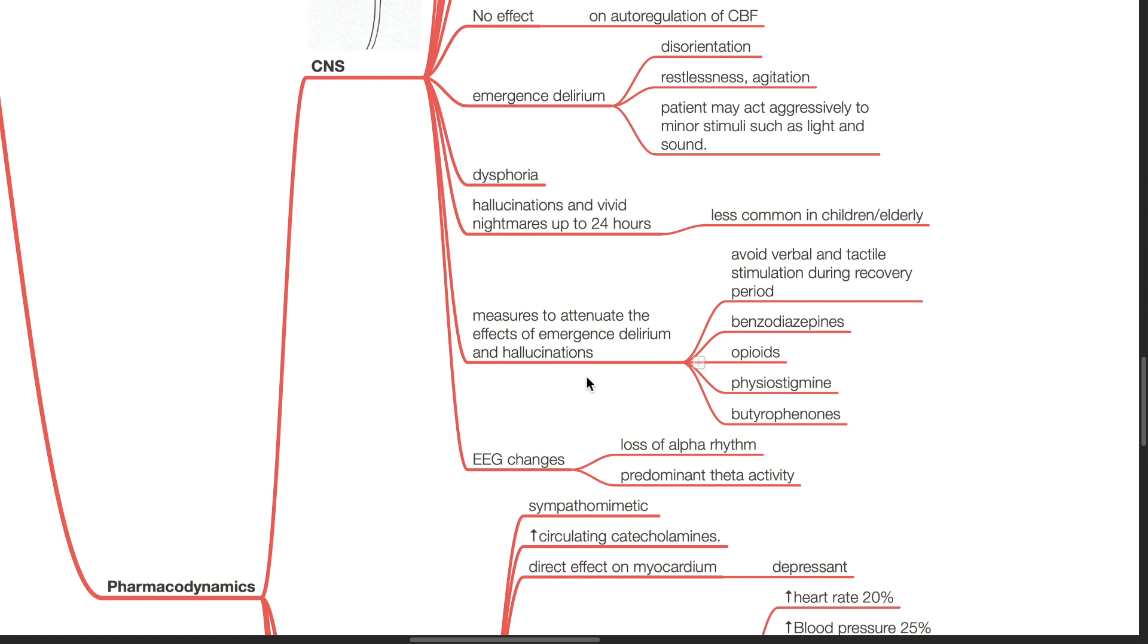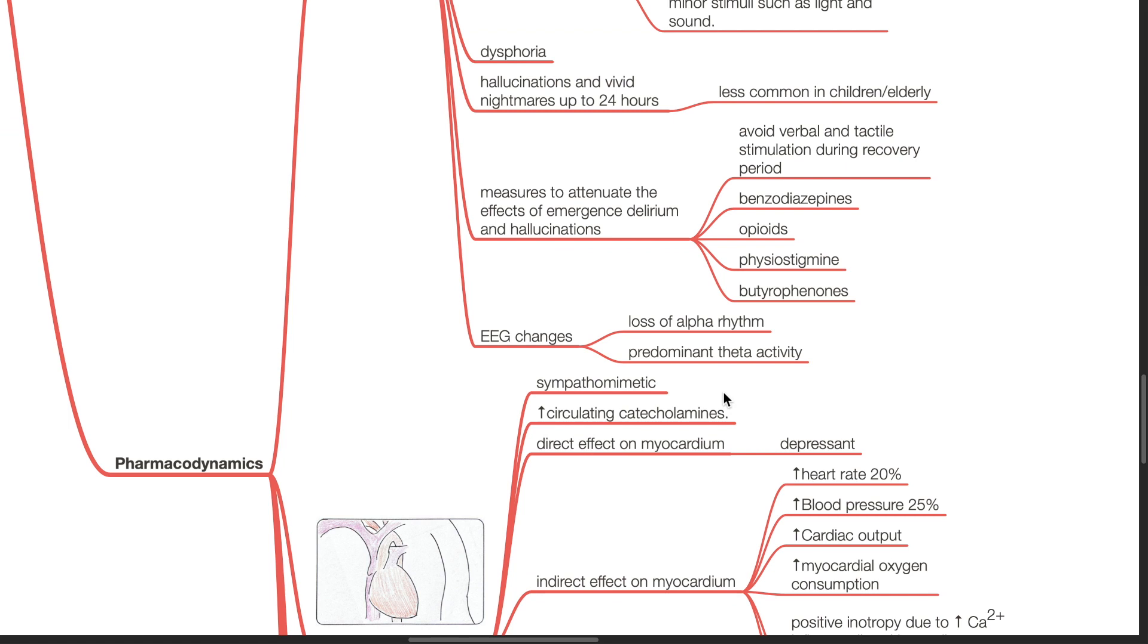Measures to attenuate the effects of emergent delirium and hallucinations include avoiding verbal and tactile stimulation during the recovery period. Usage of benzodiazepines, opioids, physostigmine and butyrophenones can help. Ketamine causes various EEG changes such as loss of alpha rhythm and predominant theta activity.